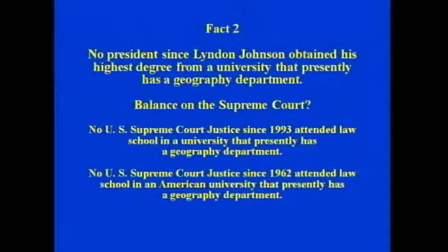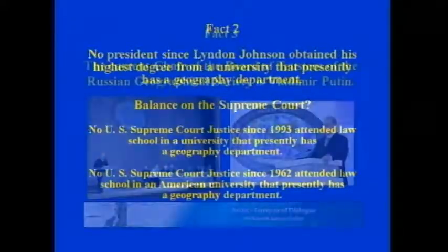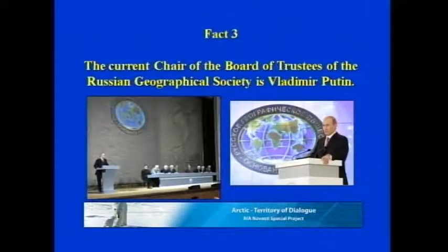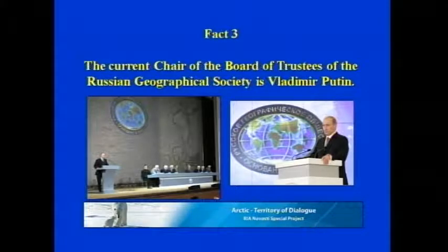No U.S. Supreme Court justice since 1962 attended law school in an American university that presently has a geography department. And the third fact is that the current chair of the Board of Trustees of the Russian Geographical Society is Vladimir Putin.